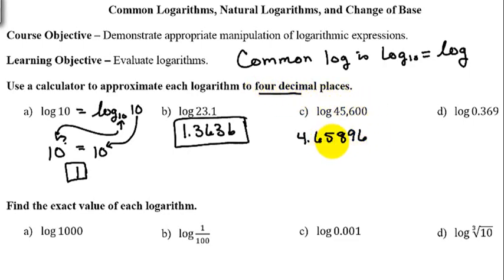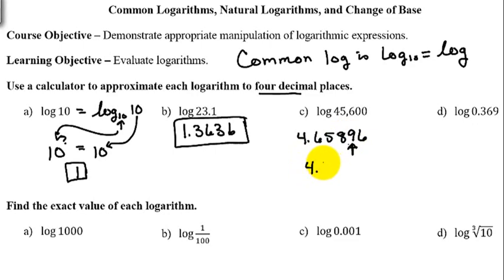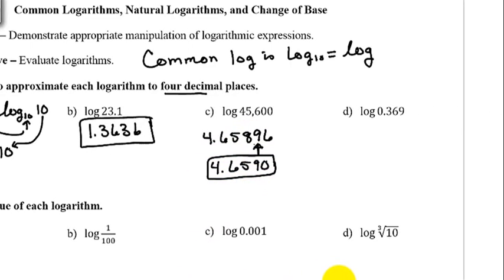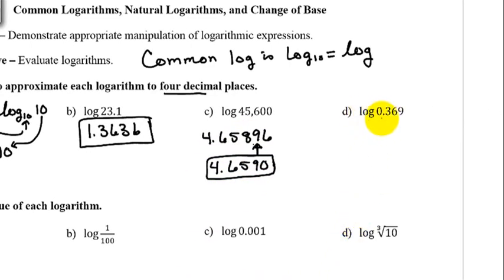We want to round to four decimal places, so I want to round to this position right here. The number immediately following the 9 is a 6, and if it's five or larger you round up. Rounding up means going from 9 to 10, which carries over, so rounding to four decimal places gives us 4.6590.